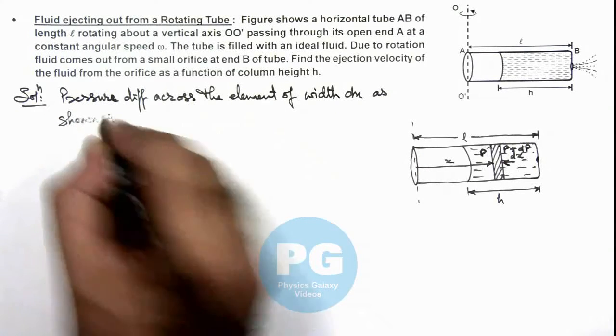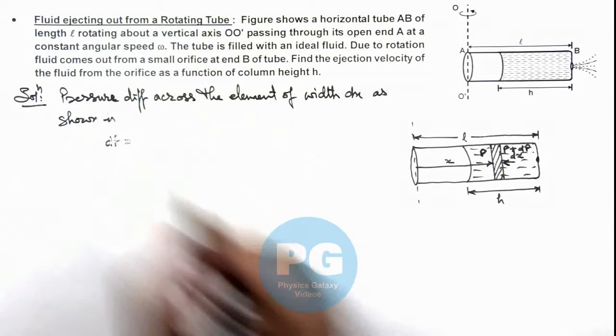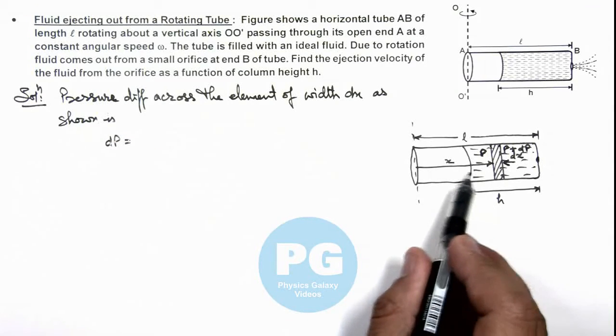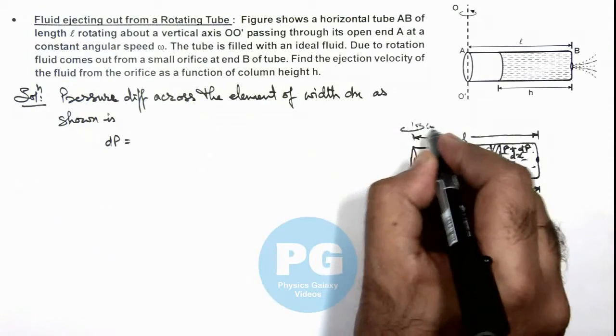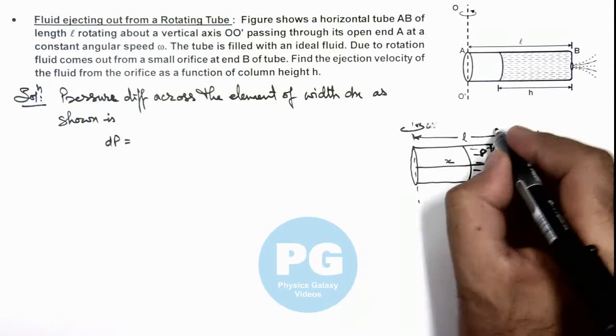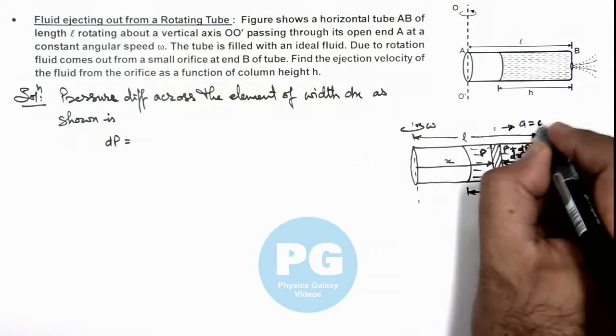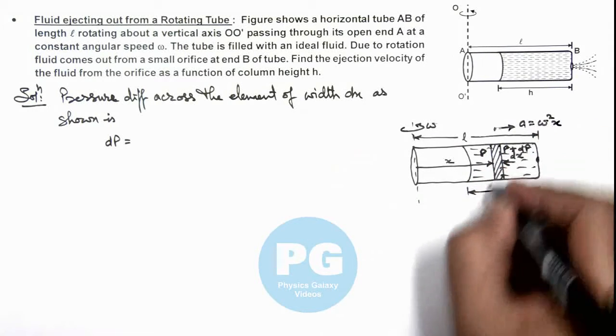We can write this dP, and the pressure difference here is created due to the centrifugal force acting on it in the frame of tube as tube is rotating at omega, and at this point the centrifugal acceleration will be omega squared x with respect to tube.